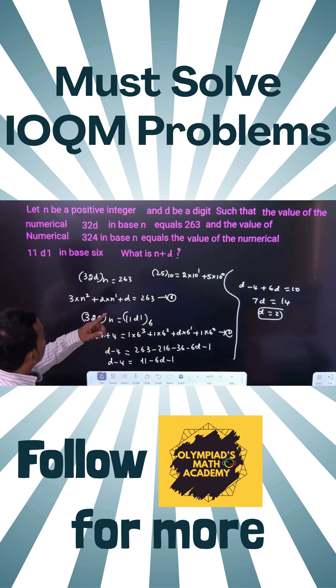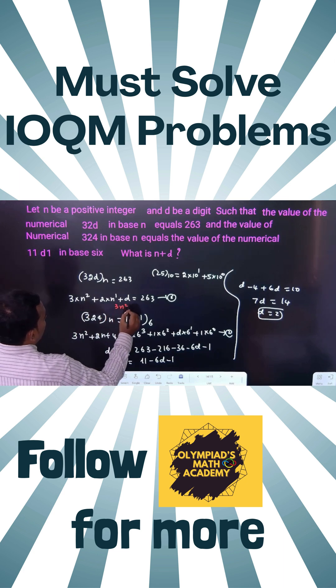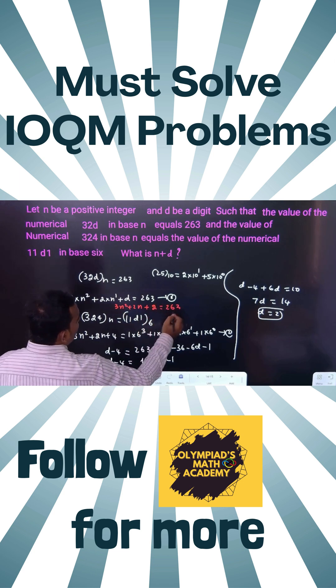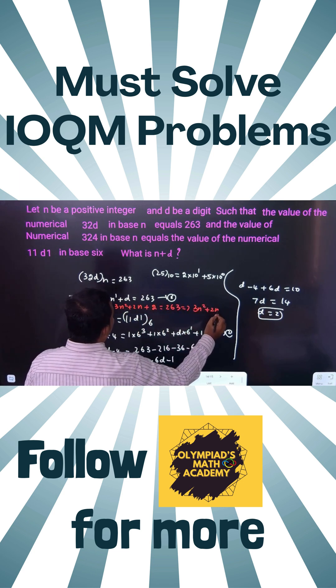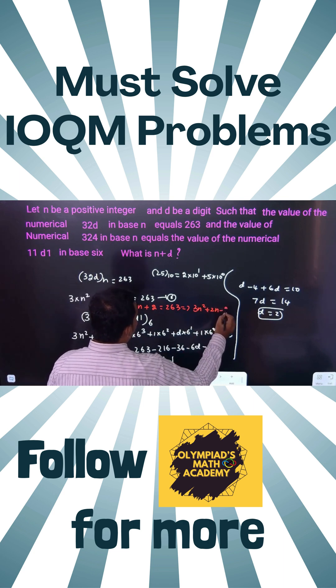Just substitute into the first equation. d equals 2, you can substitute. So 3n² plus 2n plus d, which is 2, equals 263. You can simplify: 3n² plus 2n plus 2 minus 263...